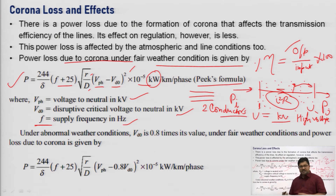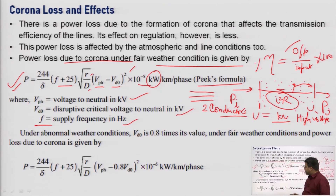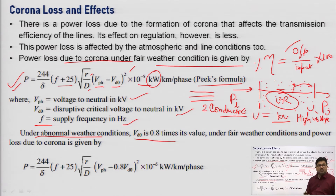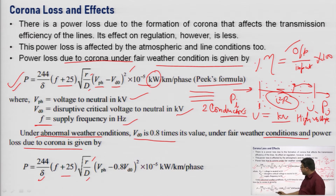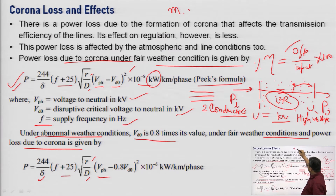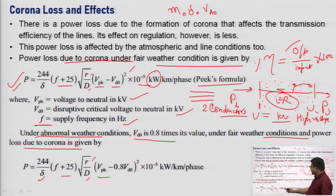Under abnormal weather conditions, this formula changes. The normal weather condition formula applies for normal temperature, pressure, and fair environment. Under abnormal weather, V_d0 is taken as 0.8 times its fair weather value. The power loss due to corona under abnormal weather is: P = (244/δ) × (f + 25) × √(r/D) × (V_ph − 0.8·m₀·V_d0)² × 10⁻⁵ kilowatts per kilometer per phase, where m₀ is the conductor irregularity factor.